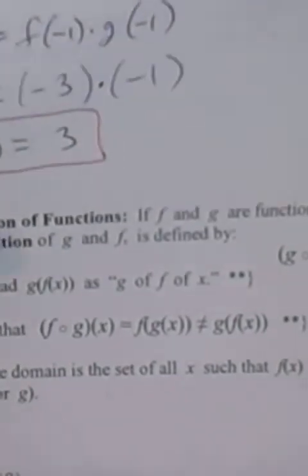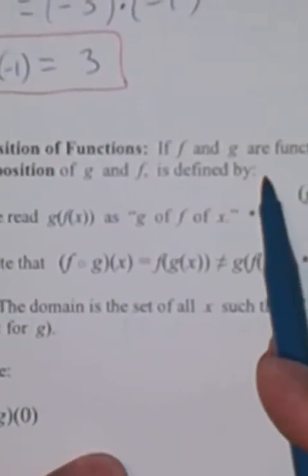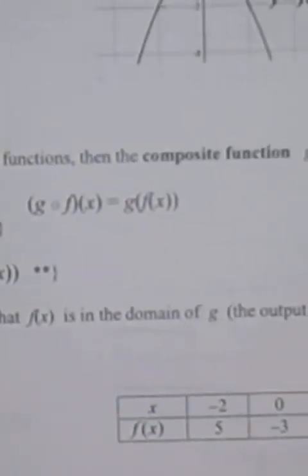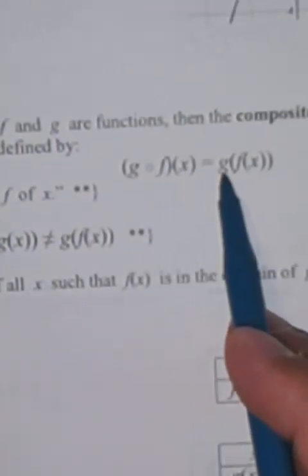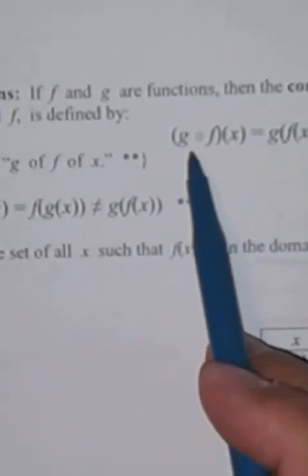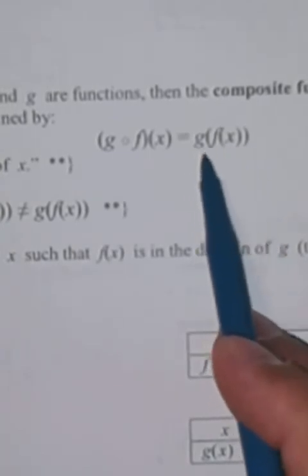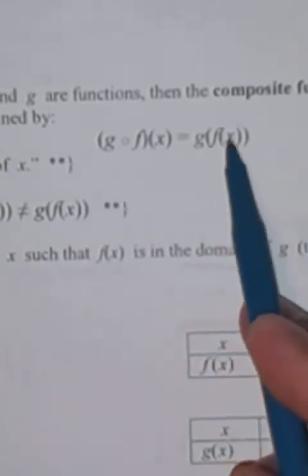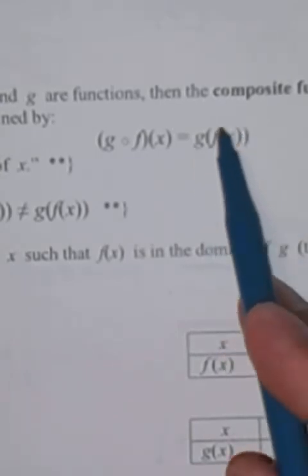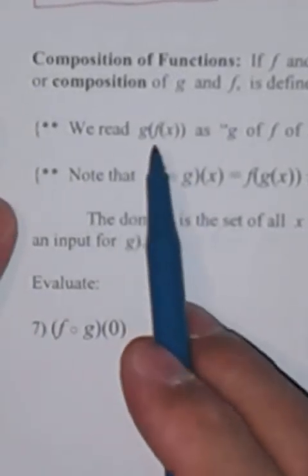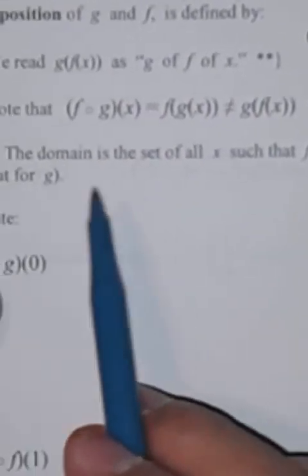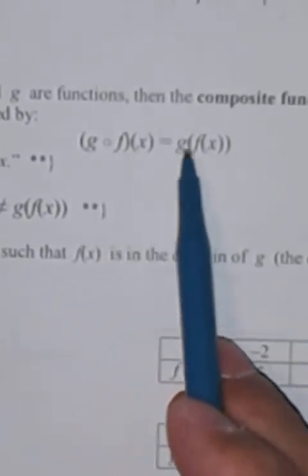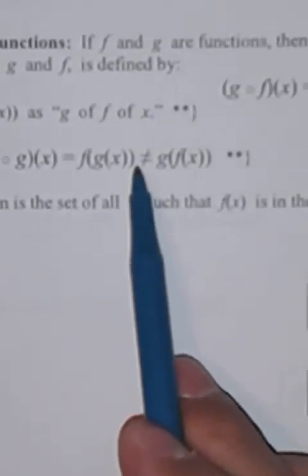The other type of combining is composition of functions, defined as follows. If f and g are functions, then the composite function g composite f is defined by g composition f of x equals g of f of x. When given that little circle between two functions, we can find g of whatever f of x is. Note that f composition g is f of g of x, which is not the same as g of f of x. So be careful with the order — g composition f means g of f of x, and f composition g means f of g of x.